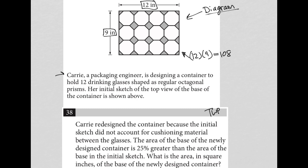So the new redesign is 25% greater, which means I'd have 108 times 1.25, right? 1.25 represents 100% plus 25%, right? So 25% greater. So I'll multiply that by 1.25. So my new area is 135.